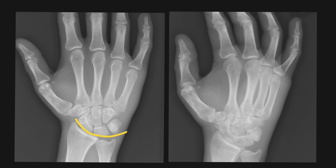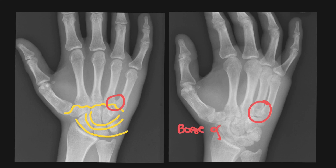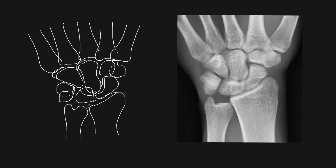On this particular case when we look at the carpus we can see that the arcs are intact, however there is an abnormality at the base of the fifth metacarpal in keeping with a fracture. In summary we have talked about the common injuries including fractures and dislocations of the carpal bones.